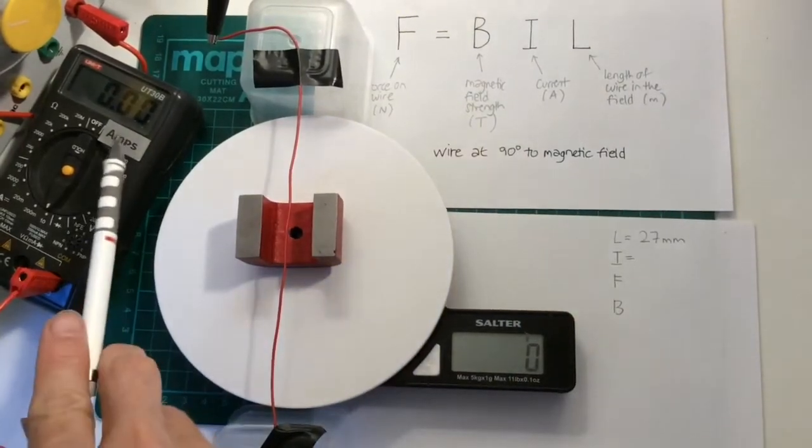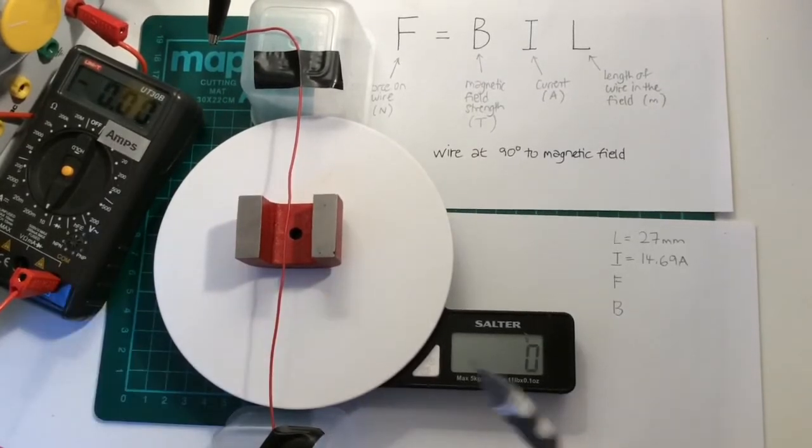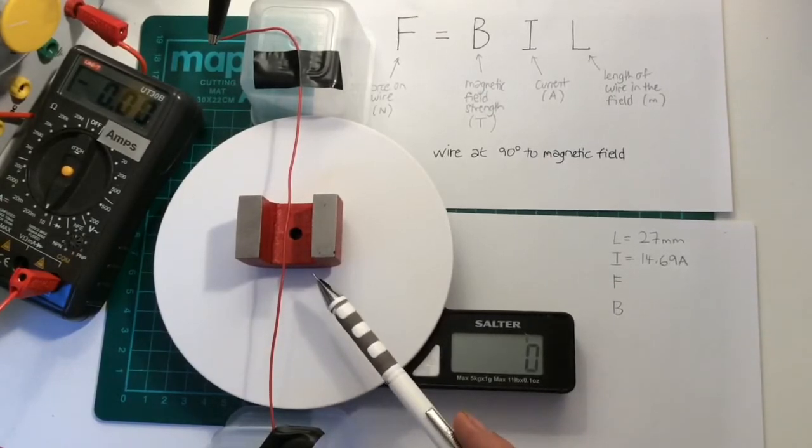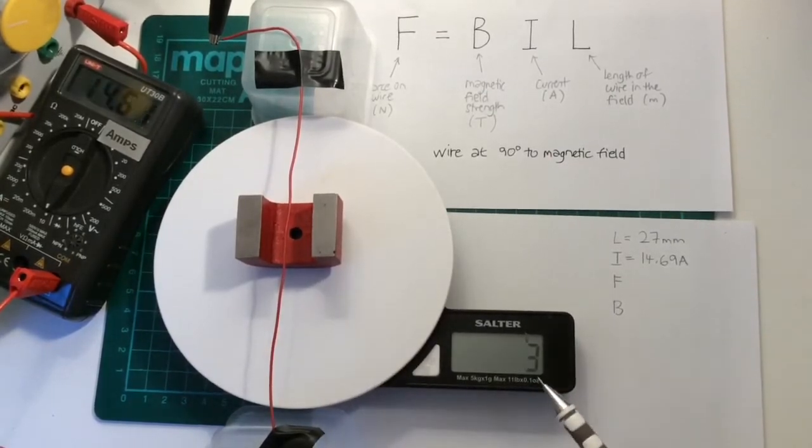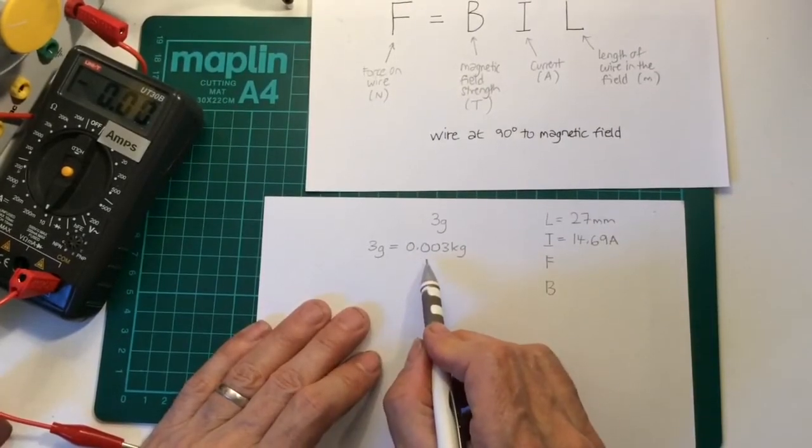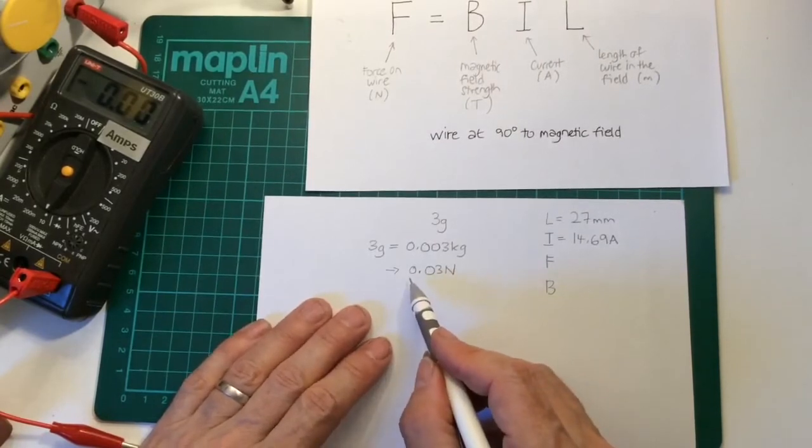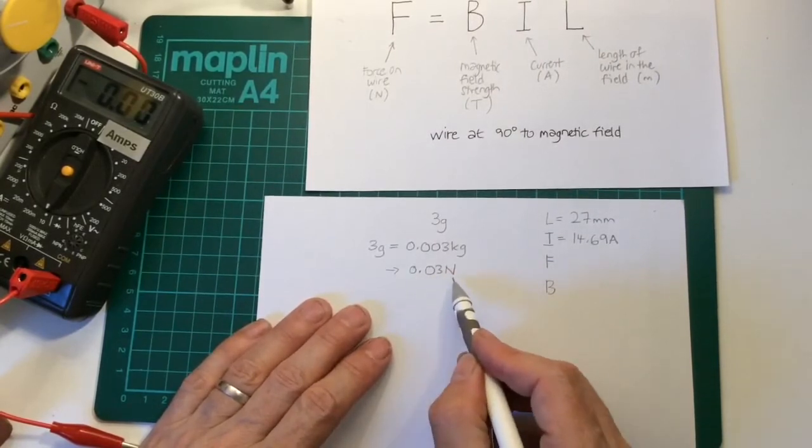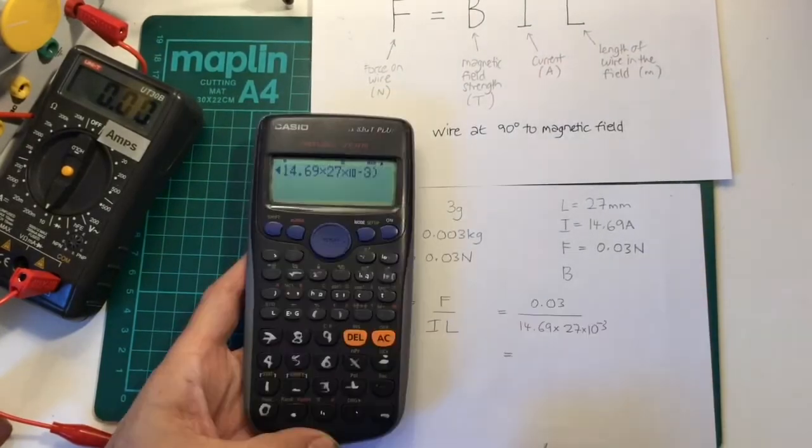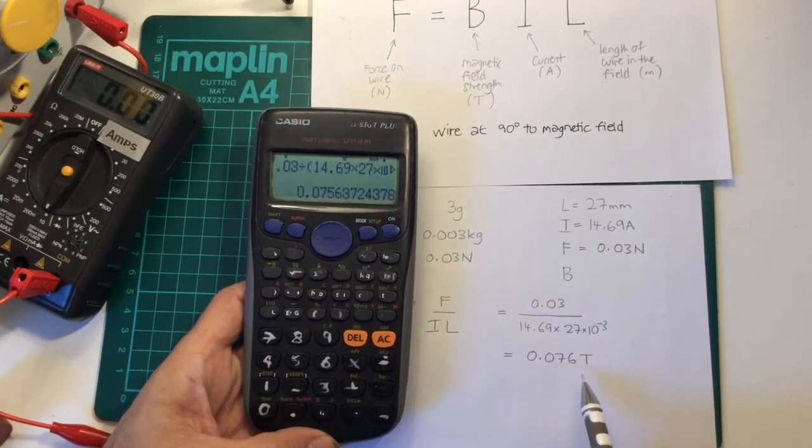Then we switch on the current and measure the current. 14.69 amps. And from Newton's third law if the magnet pushes on the wire the wire pushes on the magnet. So the magnet appears to be heavier by three grams. But three grams is 0.003 kilograms. And multiplying by gravity that gives us an effective weight of 0.03 Newtons. So we can rearrange our formula as B is F divided by I times L, which gives me a value for B of 0.076 Tesla.